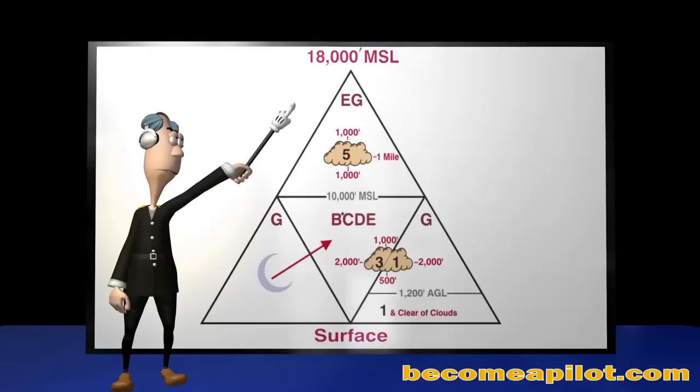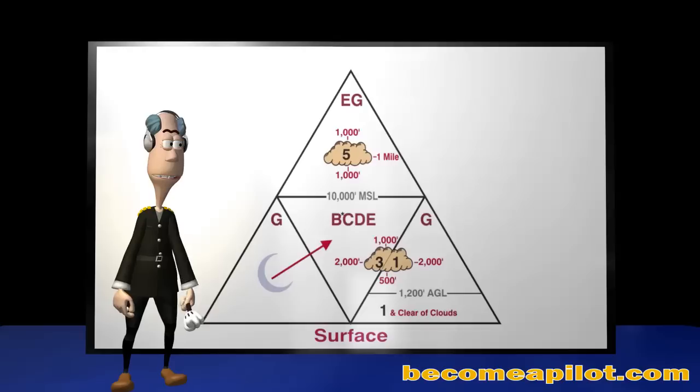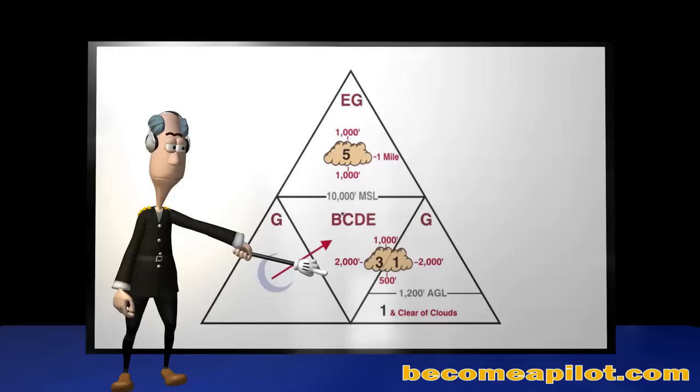This is the upper limit of Class E controlled airspace. And since VFR flying is not allowed above this altitude, this memory aid does not apply up there, so we shall no longer speak of it. The larger pyramid contains a smaller inverted pyramid within itself. The smaller pyramid allows the larger pyramid to be divided into four separate sections.